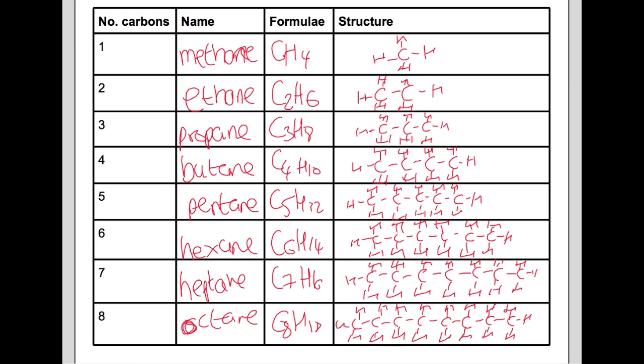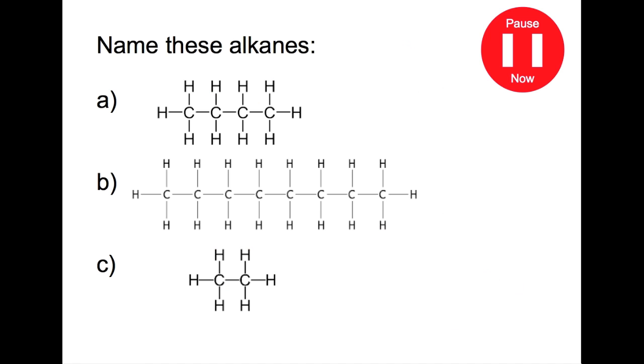Let's try some questions looking at the alkanes. Pause the video now and name these three alkanes. So this first alkane has four carbons. This means that this is butane.